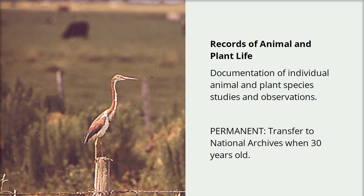A record schedule appears on screen. It reads: Records of animal and plant life — documentation of individual animal and plant species studies and observations. Permanent: transfer to National Archives when 30 years old.